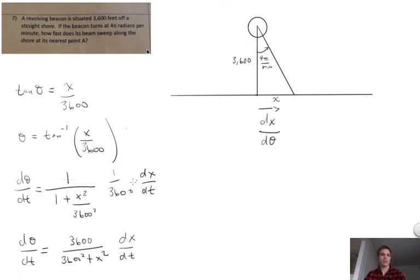Now we're solving for dx dt. How fast does the beam sweep along the shore? This is along the shore, so we want to figure out how fast it sweeps along the shore. I'm just going to bring this up here. So I'm just going to solve for dx dt.